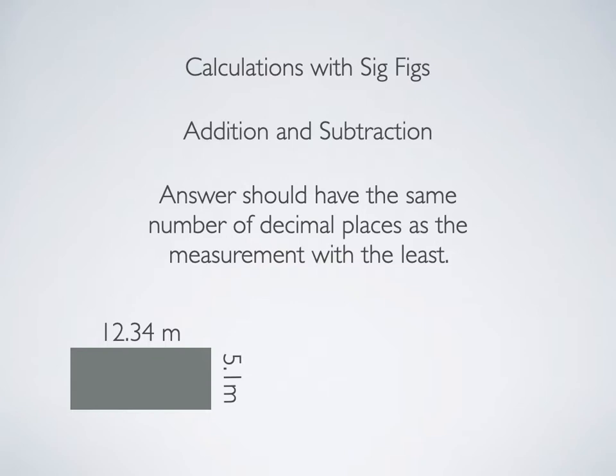You have to track where that estimated digit would be. Let's take this little plot we have here in the bottom left corner of the screen. It is a garden plot. We want to put up some kind of a fencing, so we need to know a perimeter.